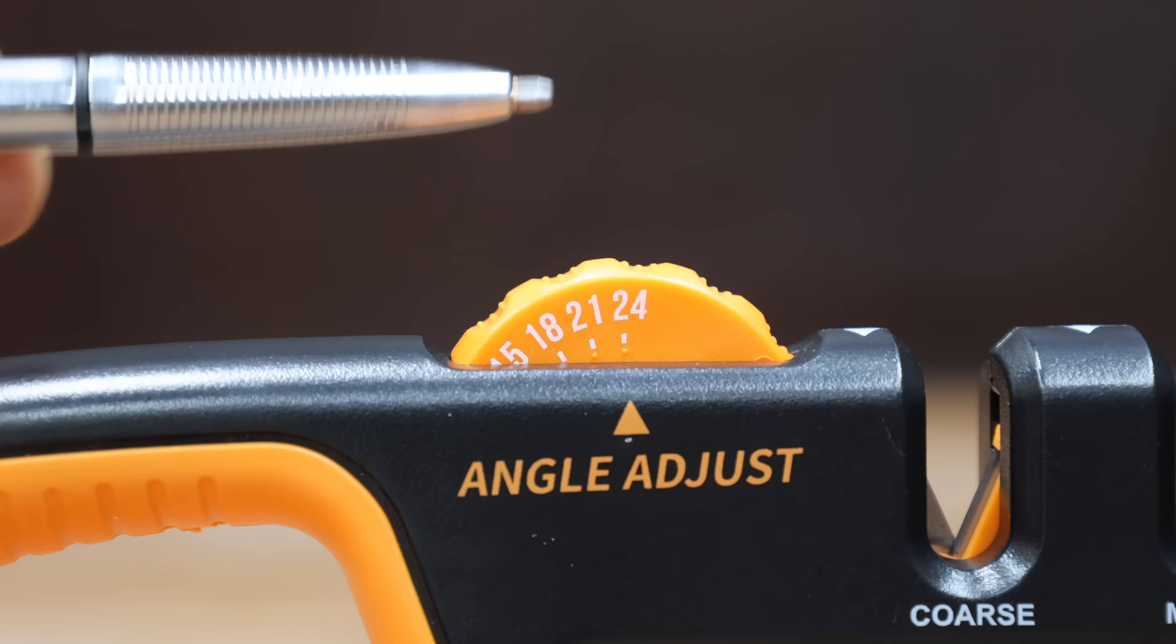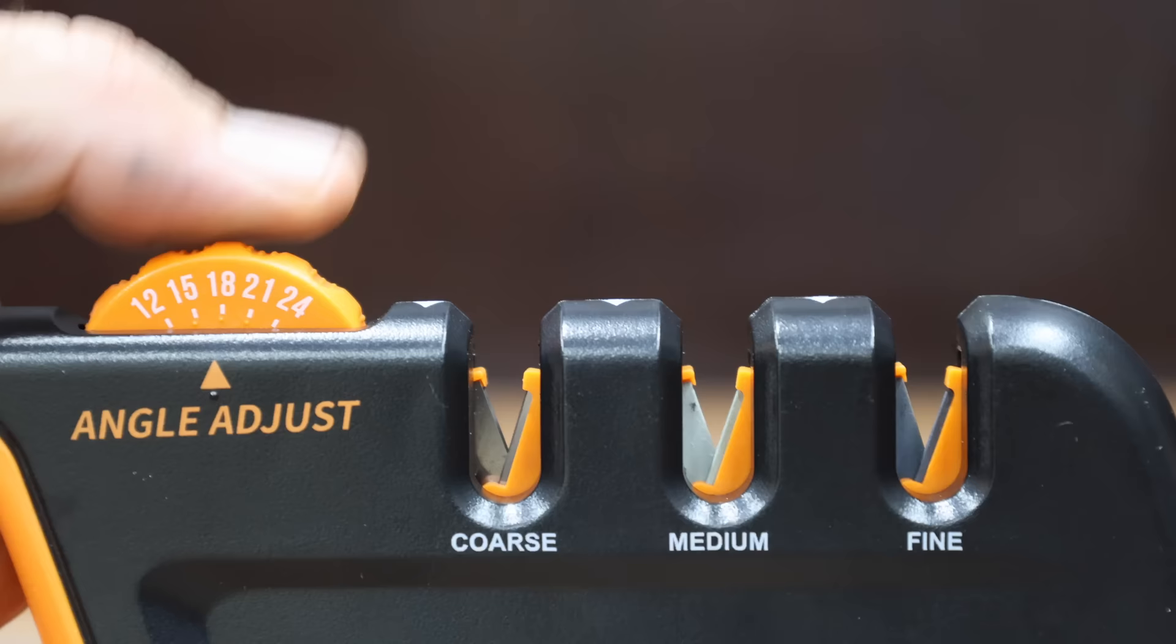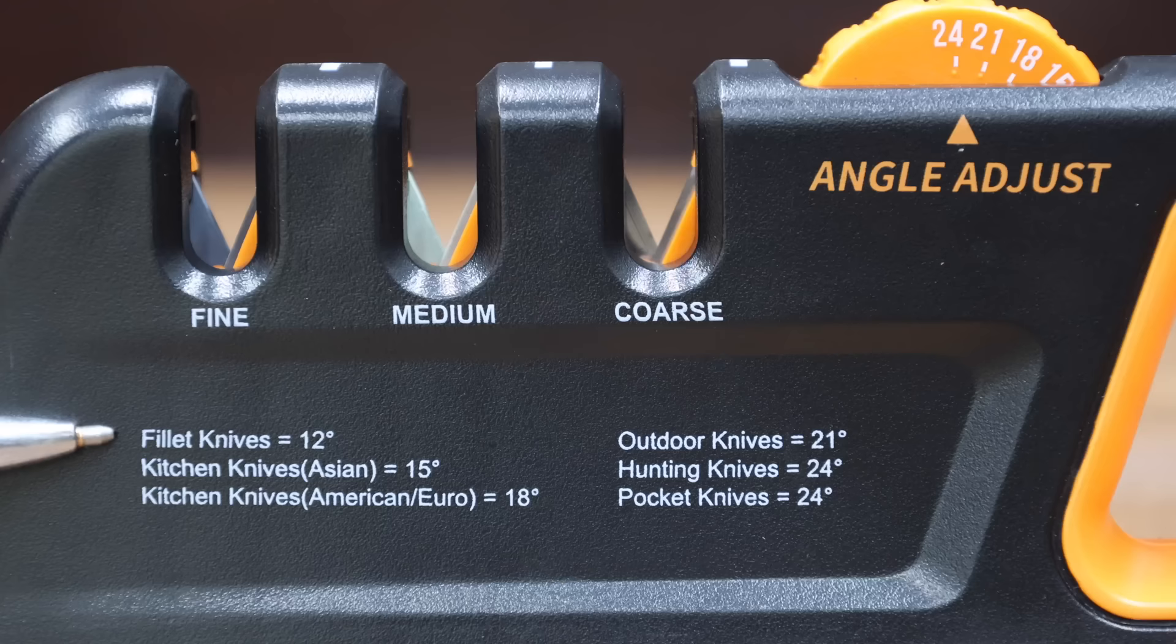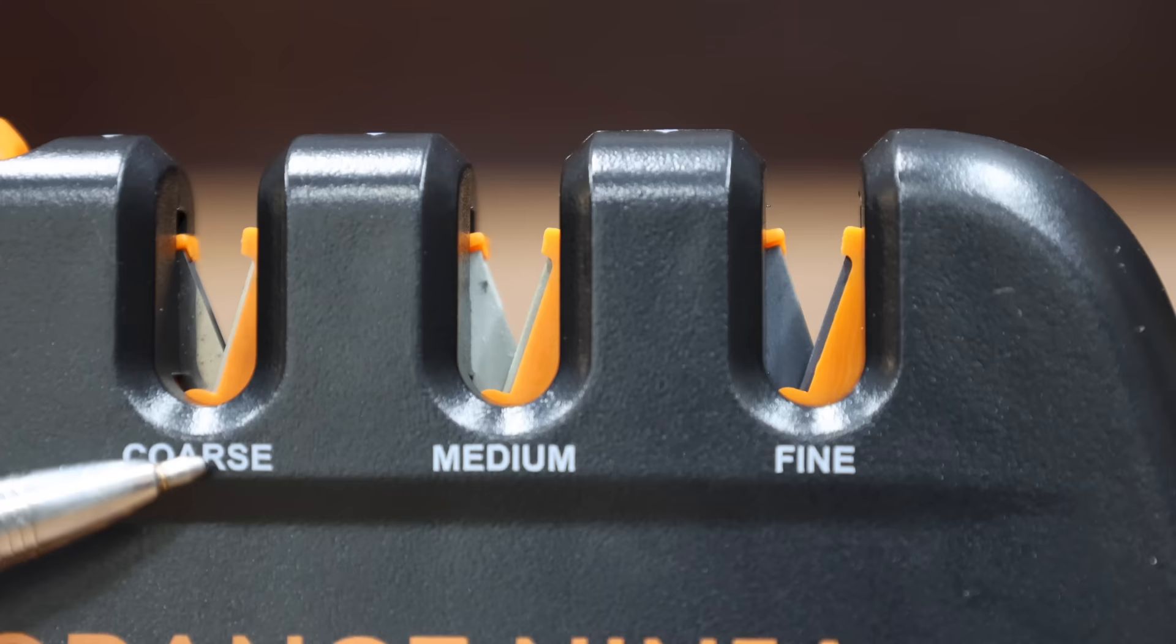All you have to do is place the blade in each of the slots and gently pull the knife through a few times for a fast, effective sharpening. It can be used to sharpen a kitchen knife, pocket knife, and even a hunting knife. The Orange Ninja is made in China.